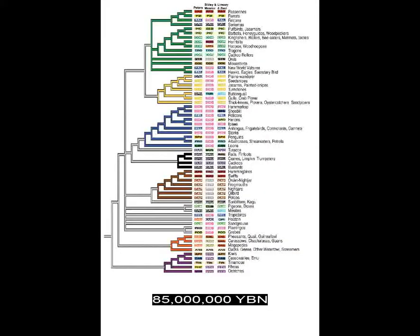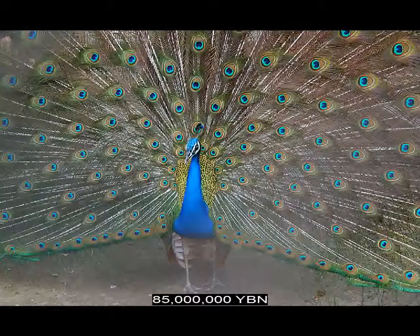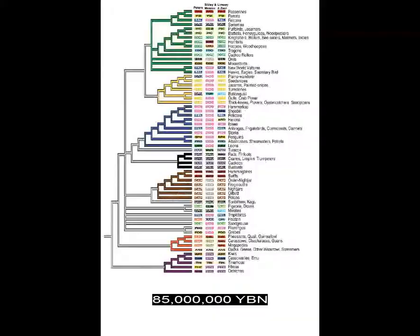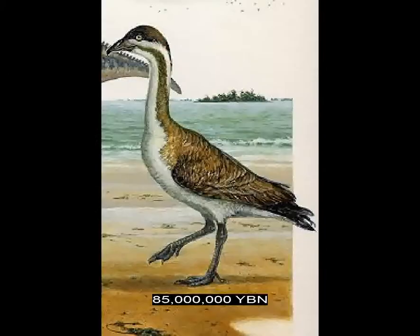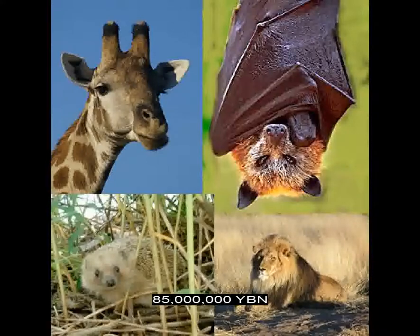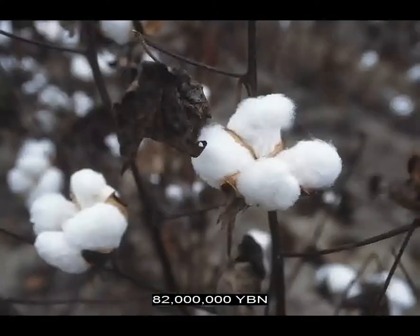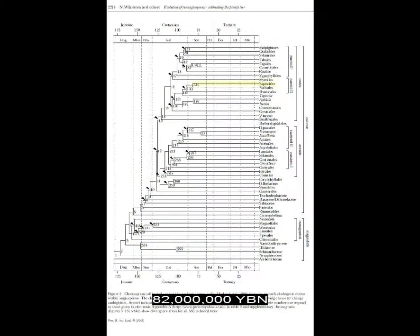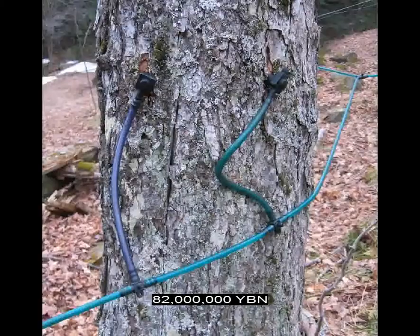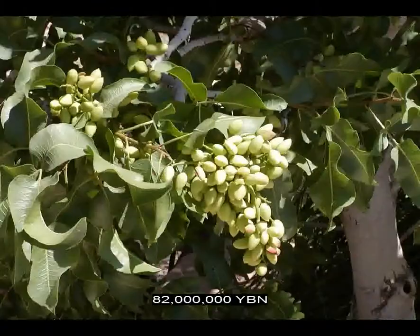Birds Galliformes evolve — chicken, turkey, pheasant, peacock, quail. Birds Anseriformes evolve — waterfowl: ducks, geese, swans. The ancestor of all placental mammals — Laurasiatheria — evolves. Flowers Malvales — okra, cotton, cacao. Flowers Sapindales — maple, citrus, cashew, mango, pistachio.